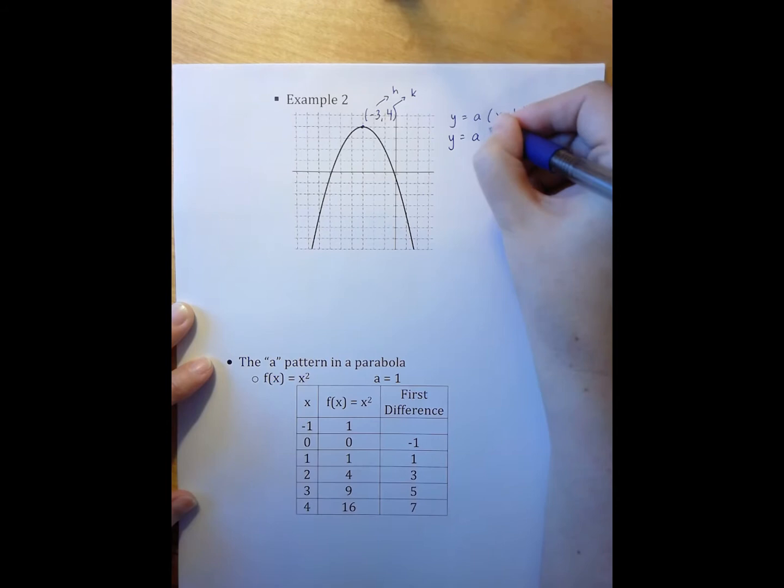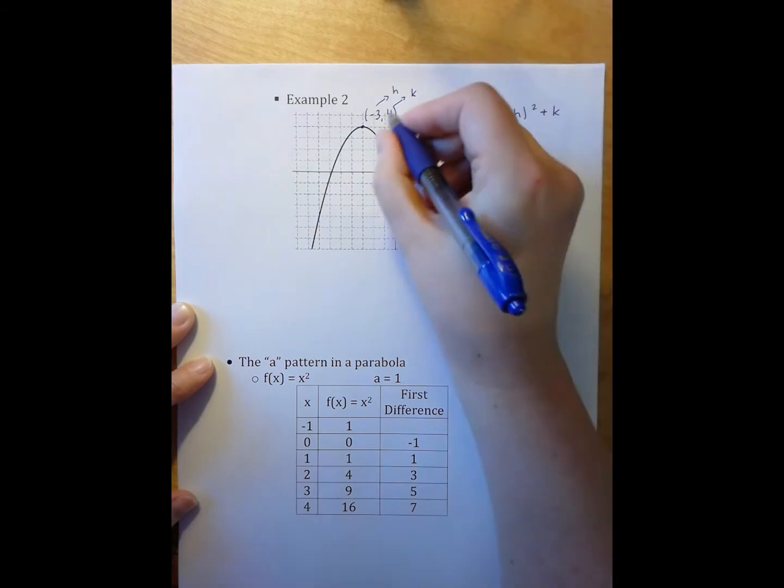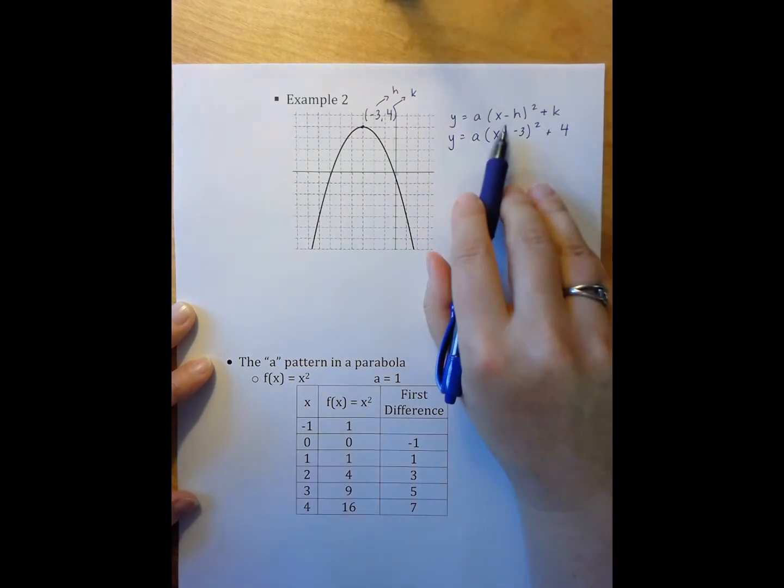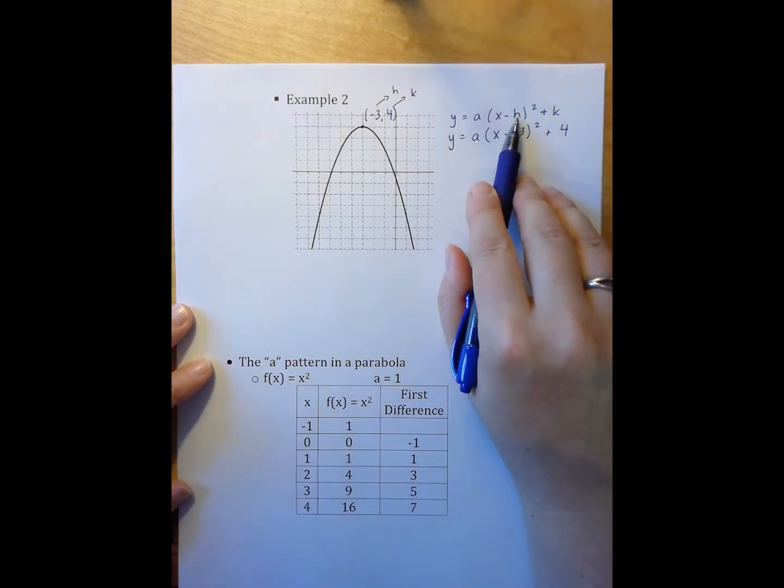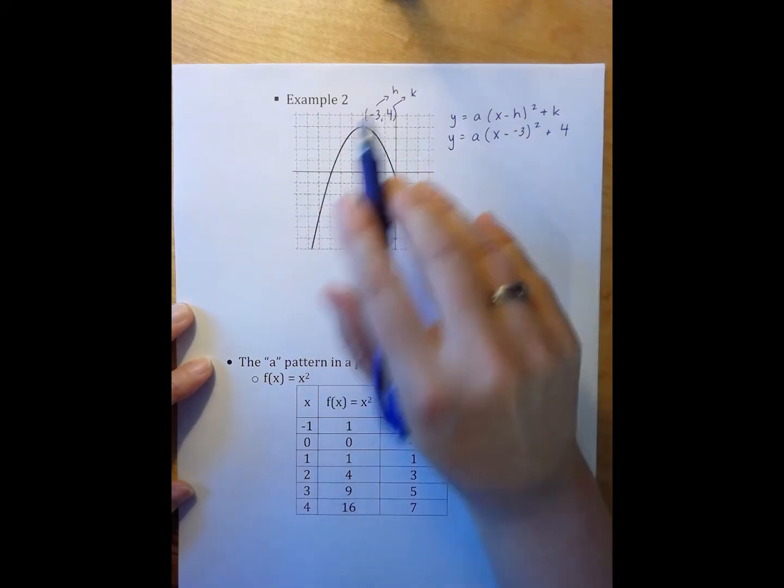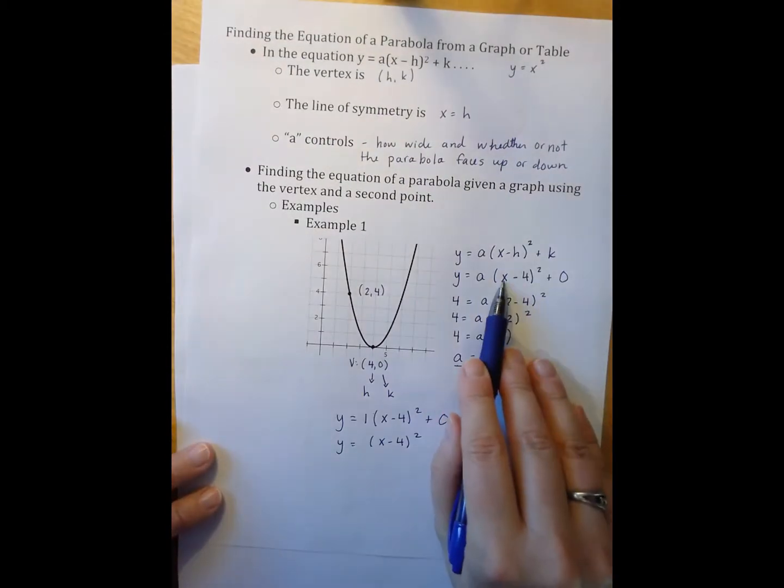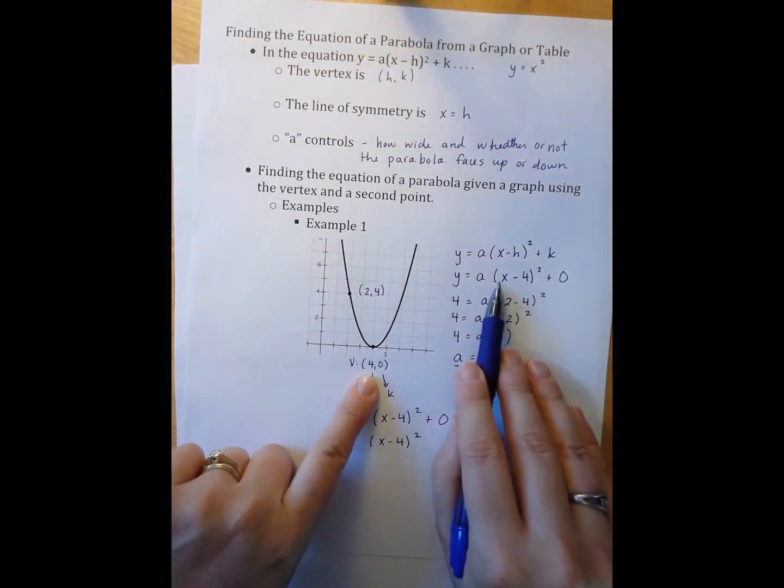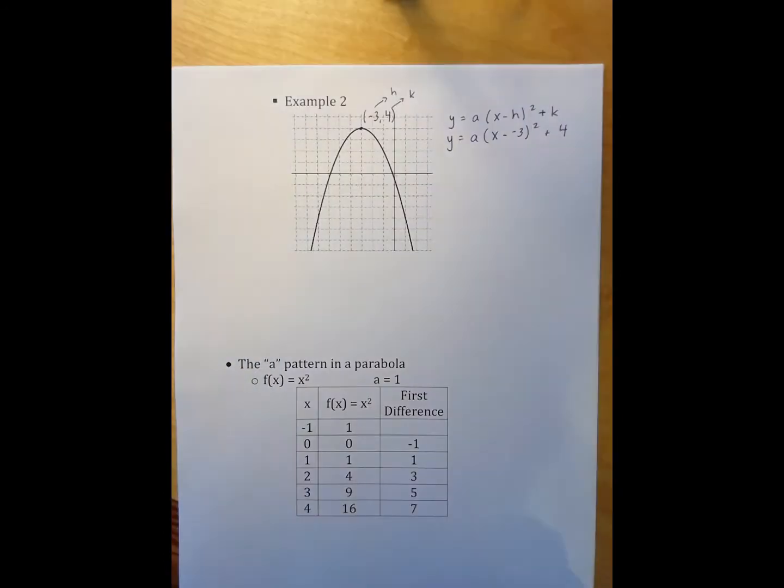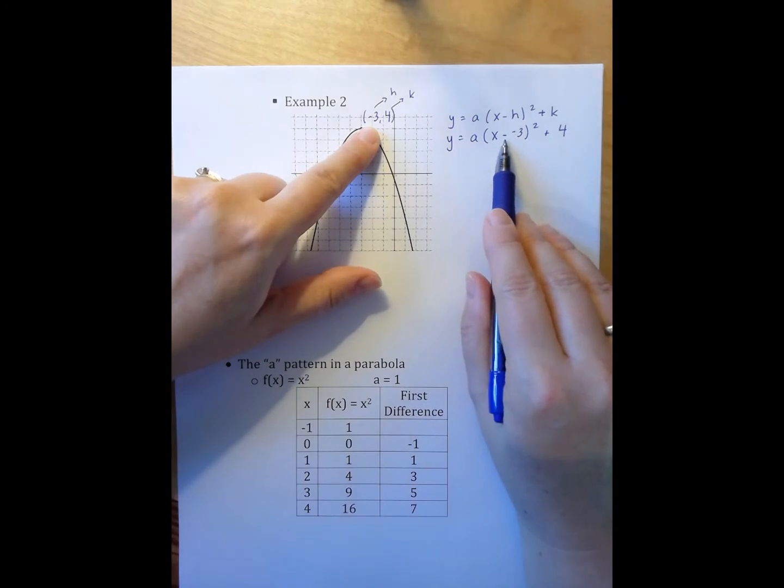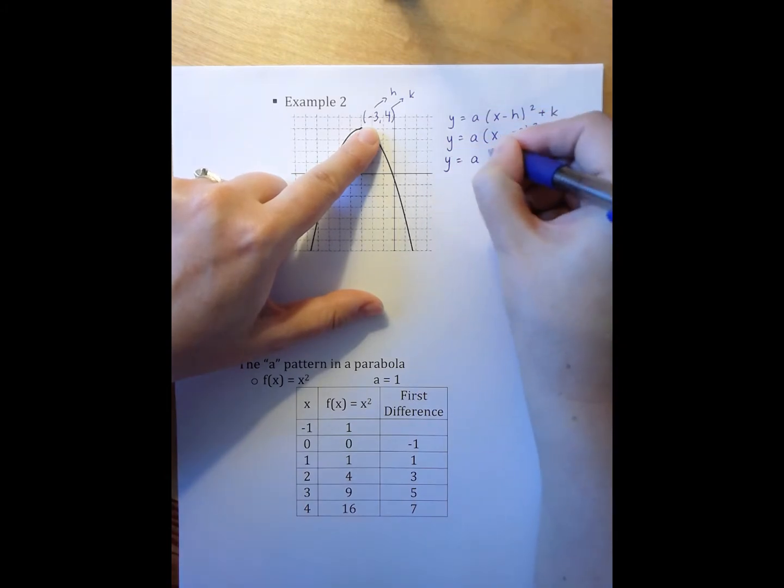So I have y equals a times x minus negative 3 quantity squared plus 4. Remember, this is minus whatever the h is, so if my h is a positive value, as it was in the first example, I'm doing x minus this positive value, so it's x minus 4. However, in this case, our h is a negative number, so I'm doing x minus a negative 3, which means I can simplify that to be x plus 3 quantity squared.